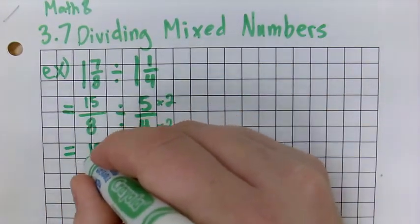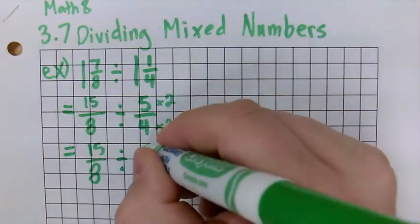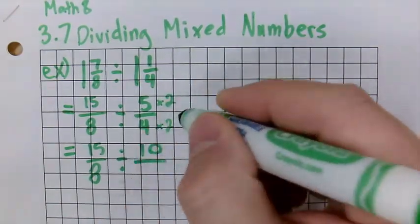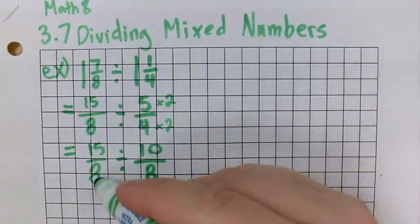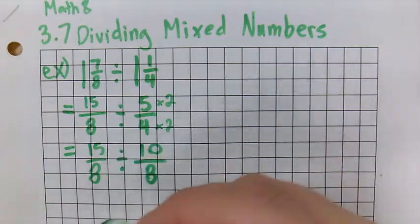So 15 over 8 stays the same, and 5 times 2 is 10, 4 times 2 is 8. Now that we have common denominators, we can just divide the top.